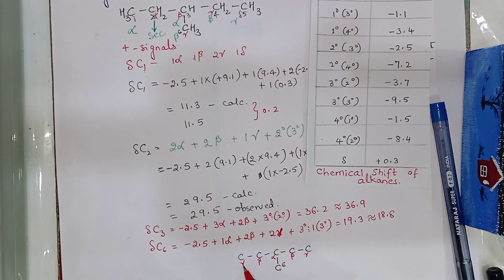This itself is a primary carbon attached to 1 tertiary carbon. So, therefore, we have 1, 2, 2 gamma, 1, 2, 2 beta and only 1 alpha. This is the way we do the calculations.